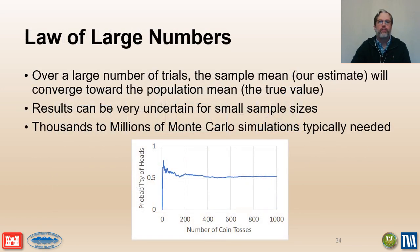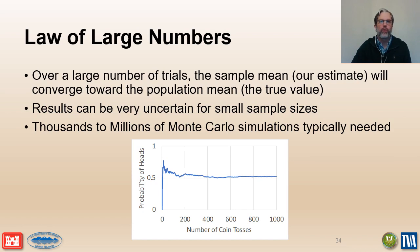The law of large numbers tells us that the Monte Carlo method will eventually converge to the true or correct answer over a large number of simulations. Even simple models like a coin toss require hundreds of simulations for convergence. Models used in a risk analysis typically need thousands to upwards of millions of simulations in order to achieve adequate convergence.